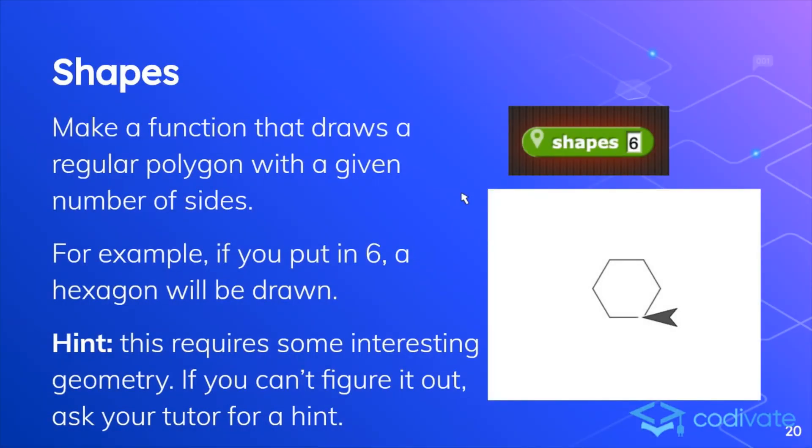Make a function that draws a regular polygon with a given number of sides. For example, if you put in 6, a hexagon will be drawn. This requires some interesting geometry. If you can't figure it out, ask your tutor for a hint. Or in this case, you can ask us in the Discord server.